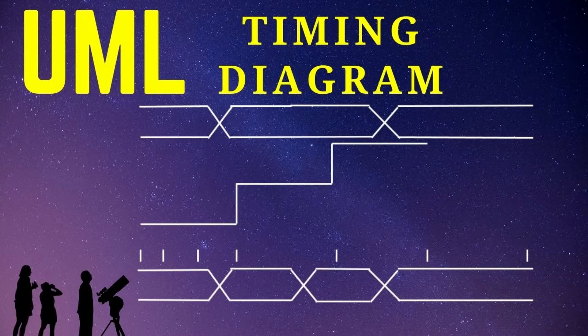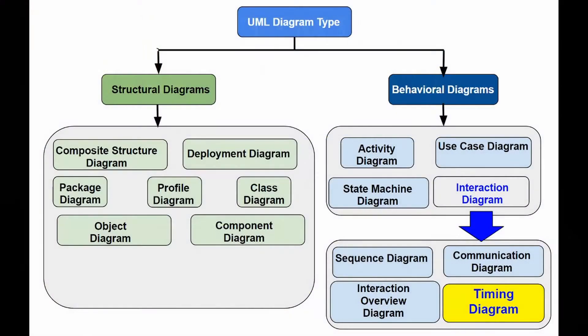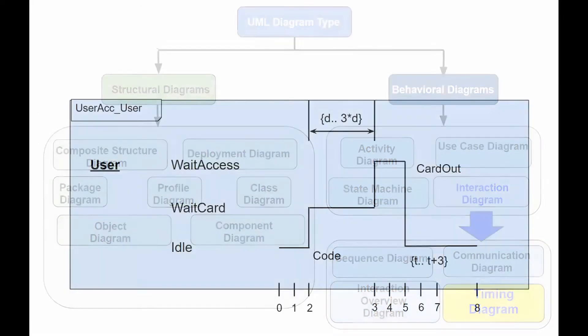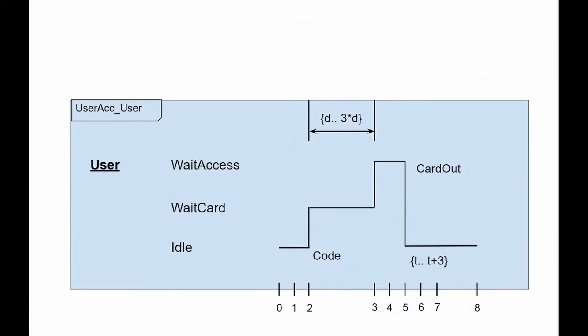Timing diagrams are UML interaction diagrams that are used when the main purpose of a diagram is to indicate the intervals between state changes of various objects. Timing diagrams focus on conditions changing within and among lifelines along the time axis and describe the behavior of both individual classifiers and their interactions, focusing attention on time of events causing changes in the modelled conditions of the lifelines.